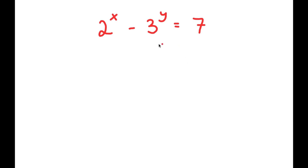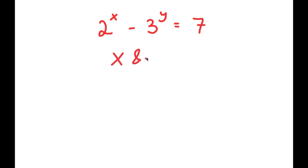In this problem, I have 2 to the power of x minus 3 to the power of y is equal to 7. I'm going to find the values of x and y.